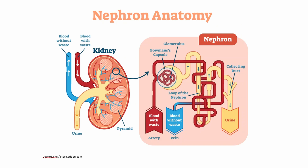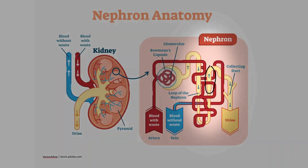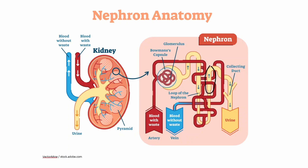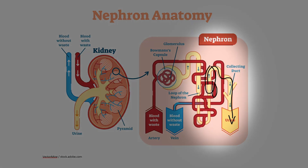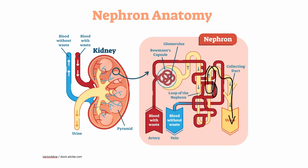Let's talk about thiazide diuretics and how they work. Here in the distal convoluted tubule, or the DCT of the nephron, thiazide diuretics are going to block sodium and chloride from being reabsorbed in the body. It blocks the sodium-chloride symporter — the co-transporter that allows them to get through and be reabsorbed back into the blood. So sodium and chloride can't get back into the blood as much, so they are then excreted out into the urine. That is in the DCT, the distal convoluted tubule.